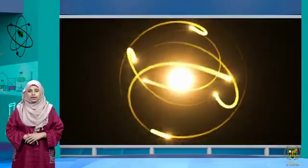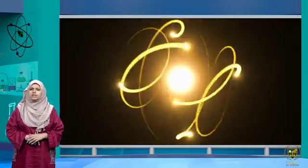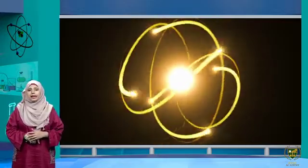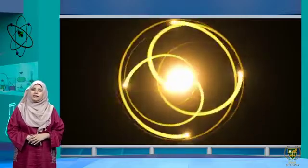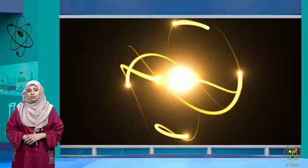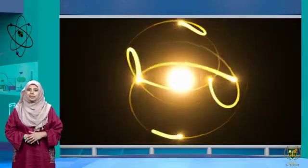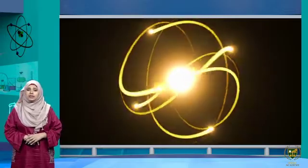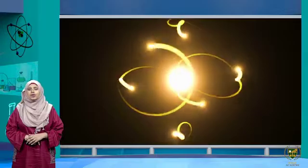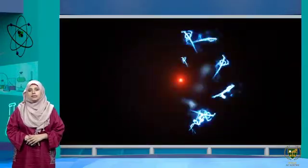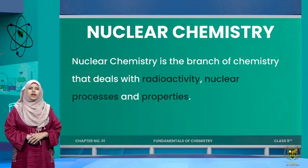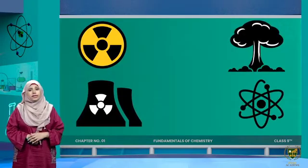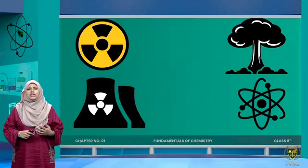Everything around us is made of atoms. Atoms of different elements are present, but some atoms are not stable. Unstable atoms try to release or emit energy to get stability, and they emit energy in the form of radiations. We call this process radioactivity. These radiations are not always beneficial — they are very dangerous for living tissues as well as for other substances, though this energy can also be useful.